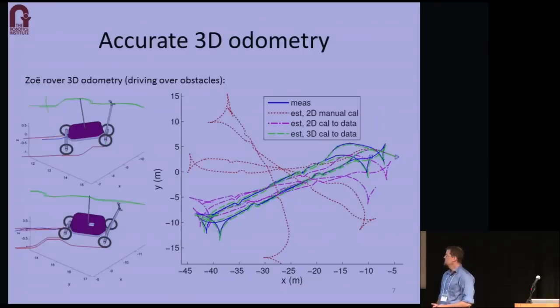And finally, here are 3D odometry results for the passively articulated Zoe rover. In this particular test, Zoe drove laps around a course with four ramp-shaped obstacles. And we show dramatic improvement in odometry accuracy when calibrating online as opposed to using the manual calibration and when using 3D versus 2D kinematics. And so in this particular test, after driving for 200 meters, the odometry error was less than 30 centimeters and 3 degrees in yaw without using a gyroscope.